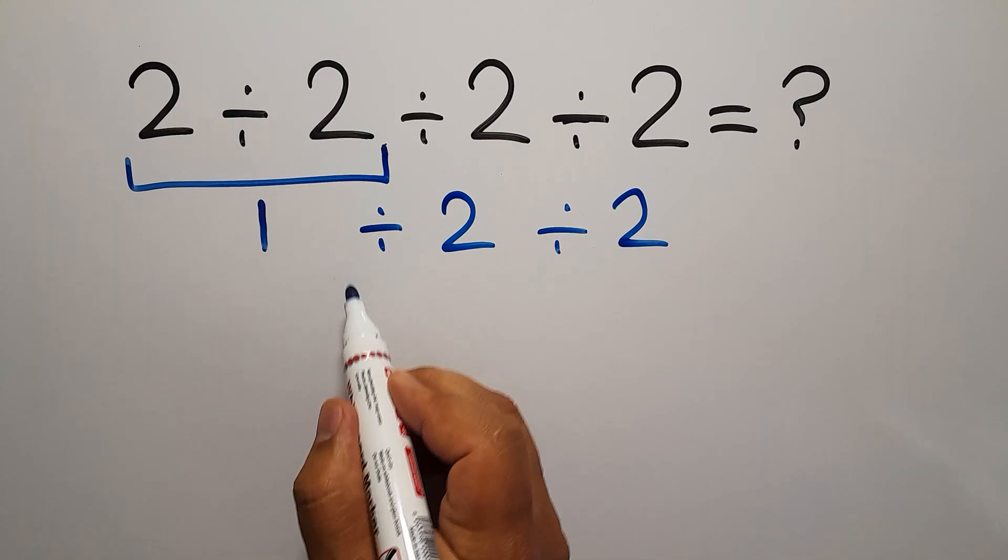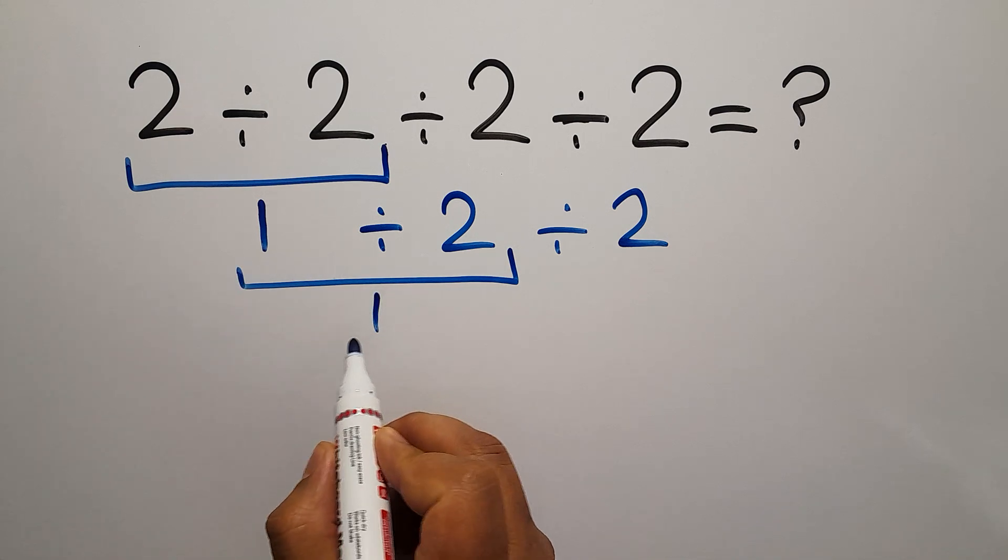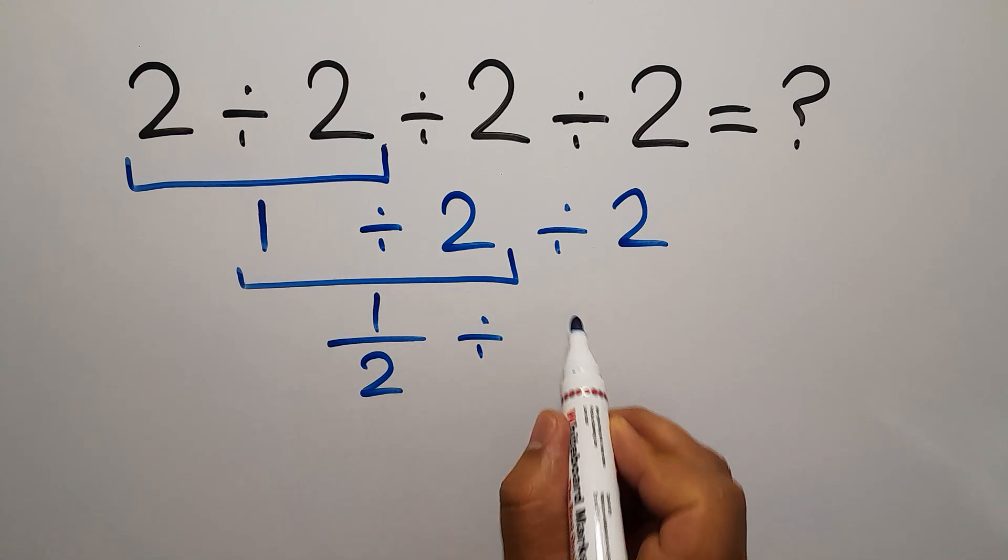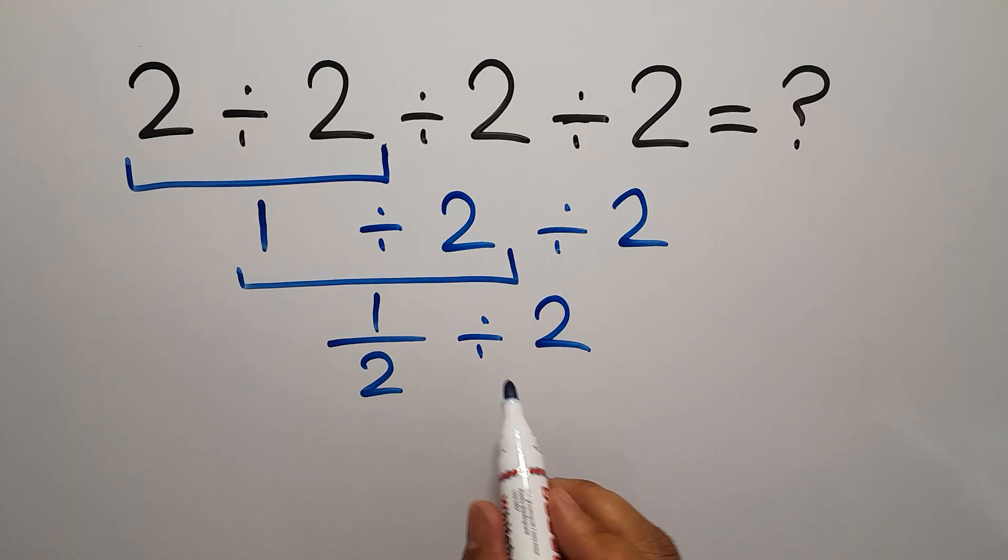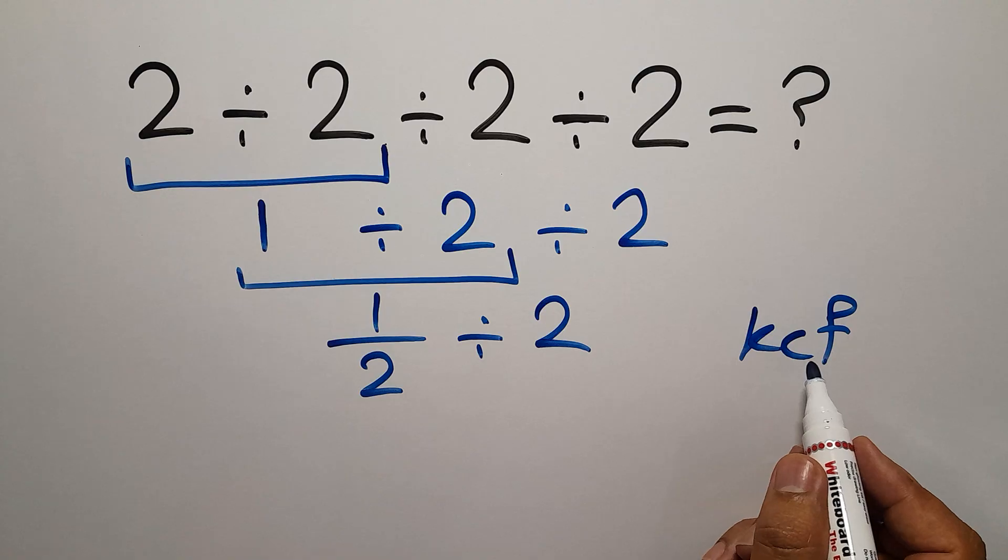Now we have to do this division. 1 divided by 2 can be written as 1 over 2, and again we have divided by 2. Now according to the KCF rule, K stands for keep, C stands for change, and F stands for flip.